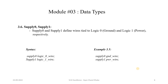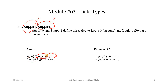The supply0 and supply1 data types are not typically used in RTL design but are used in simulation, particularly in mixed-signal or analog verification. They are a kind of wire data type but with fixed values: supply0 is a wire connected to ground (logic 0), and supply1 is a wire connected to power (logic 1). We declare them using the supply0 and supply1 keywords respectively.